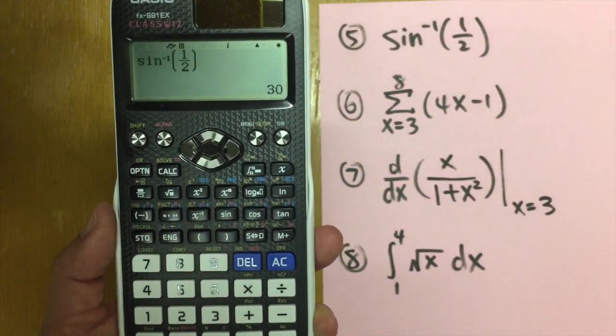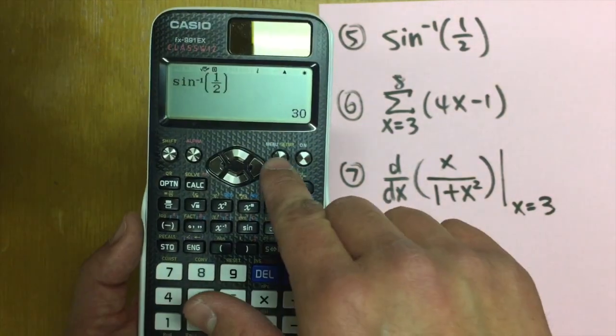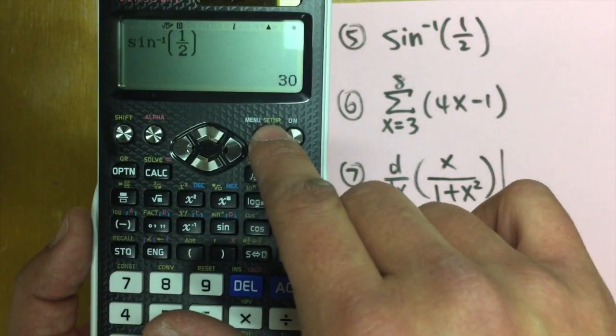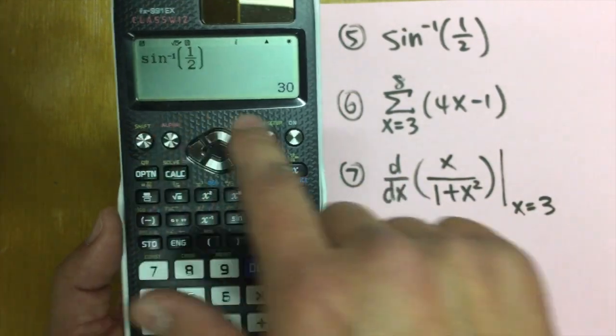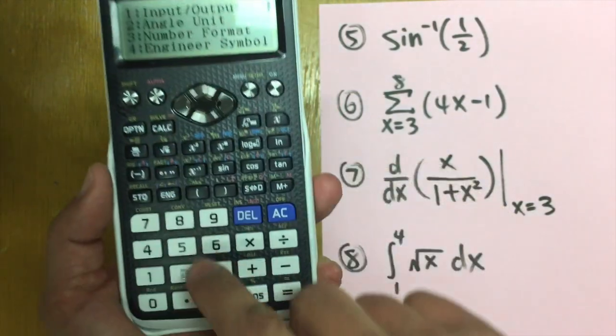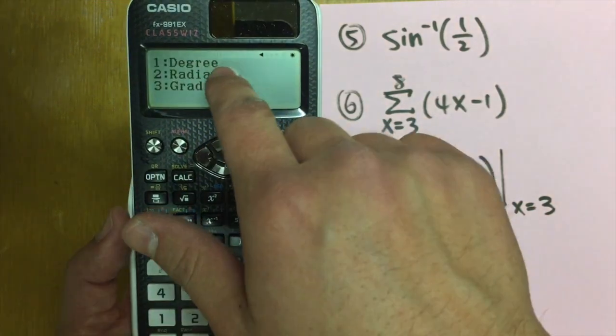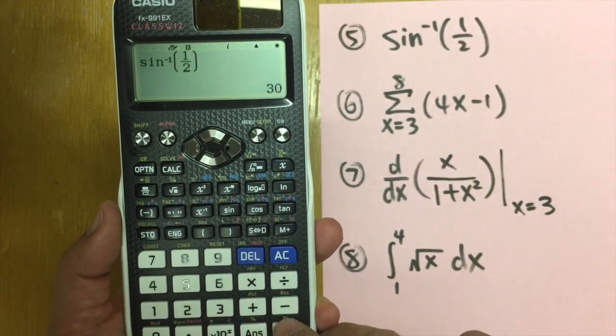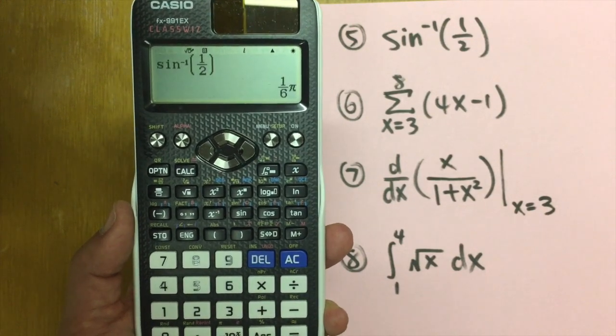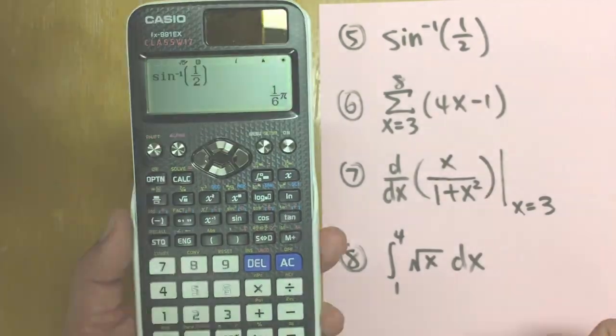sometimes we have to use radians. What can we do in that case? Go to setup. This right here is a setup in yellow. So press shift and setup. Option two, we have the angle unit. So press two. And we want to use radians. So press two. And we can do this again. And you see, we will have one over six pi. This is great, right?